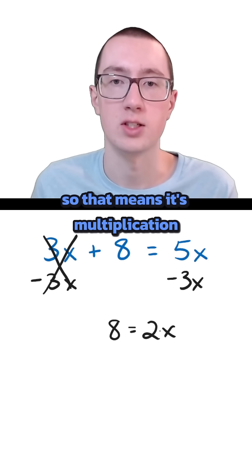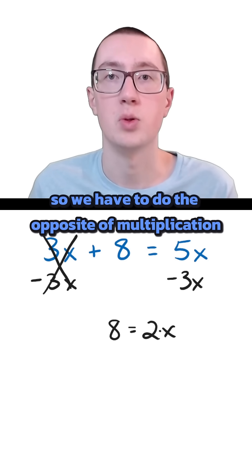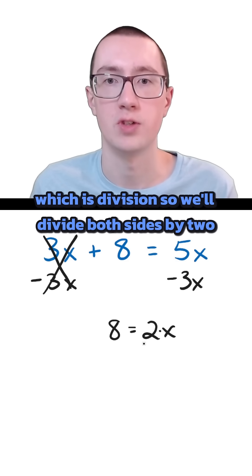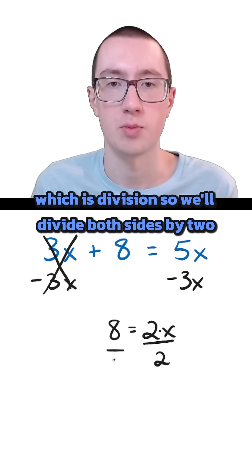Here we don't have a sign in between, so that means it's multiplication. So we have to do the opposite of multiplication, which is division. So we'll divide both sides by 2.